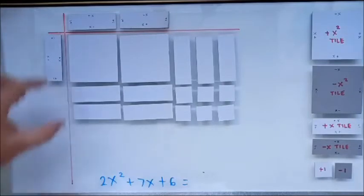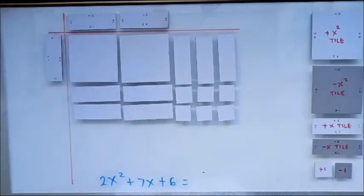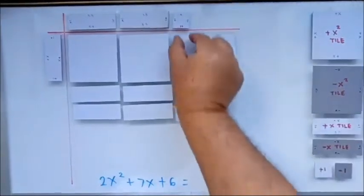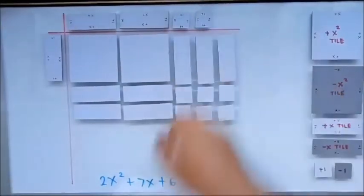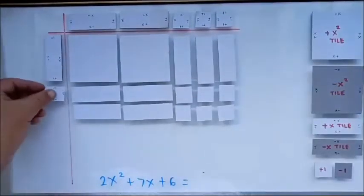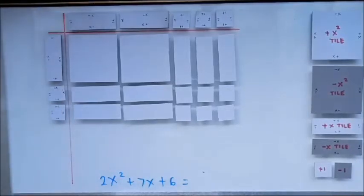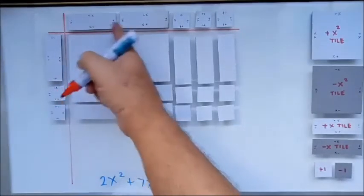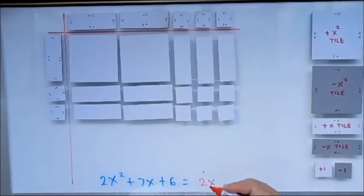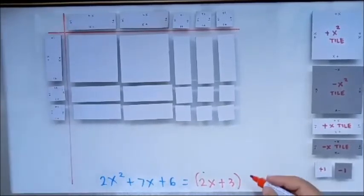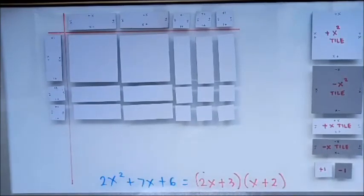Since this is positive, let's measure the sides. One, two — 2x positive plus 3. Then the other side: 1x plus 2. So this would be your final answer: (2x + 3)(x + 2).